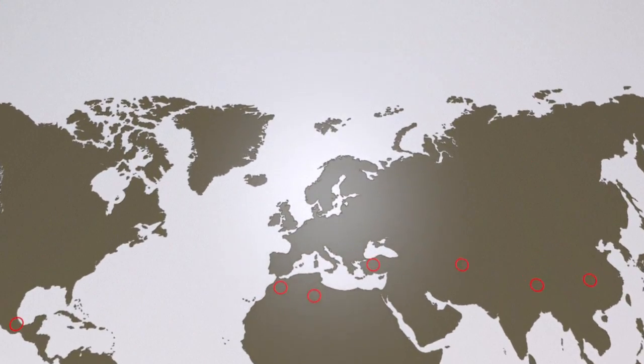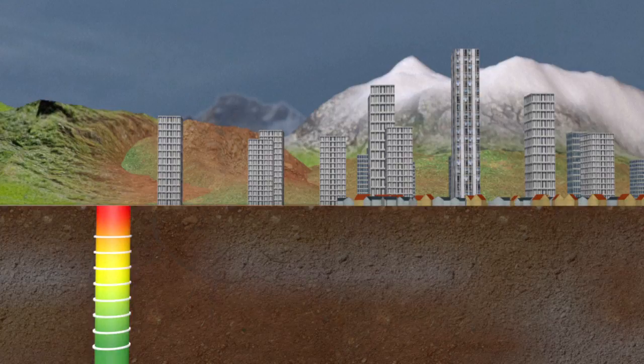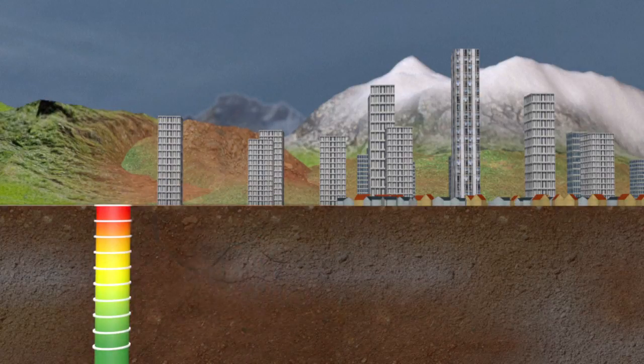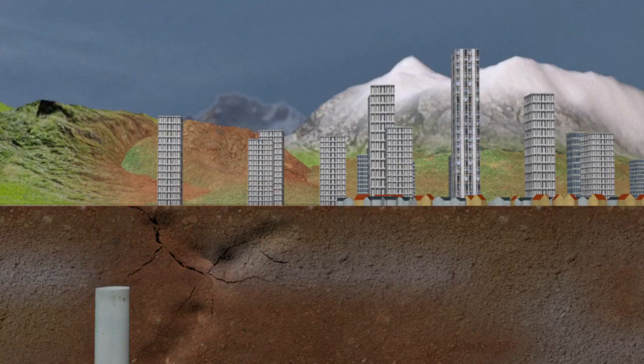The moment magnitude scale rates energy released during an earthquake. It was devised to measure large tremors more accurately than the older Richter scale. In theory, there's no limit, but never has an earthquake measured more than the 9.5 magnitude recorded in Chile in 1960.